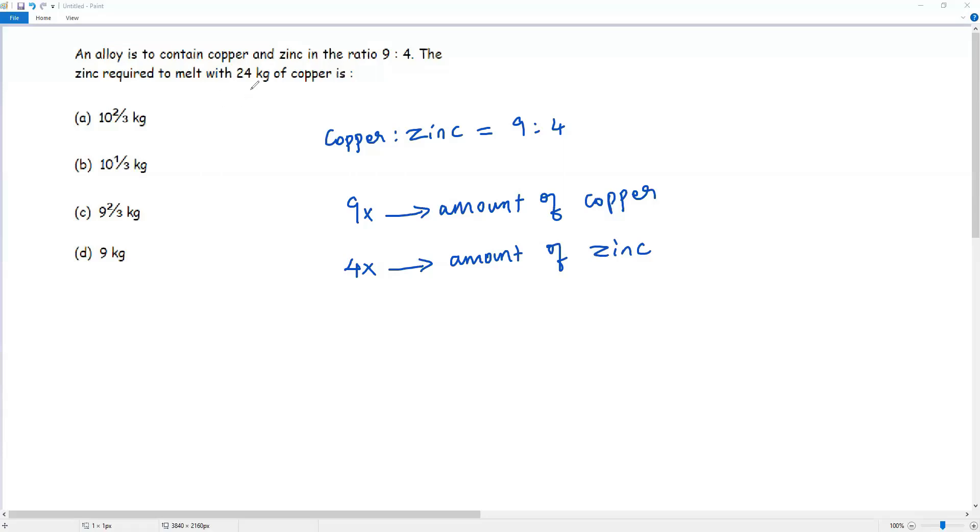But the question says the amount of copper is 24 kilograms. So from the question, we have the amount of copper as 24 kilograms.